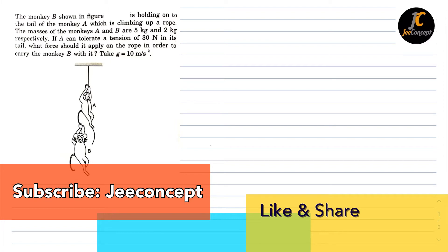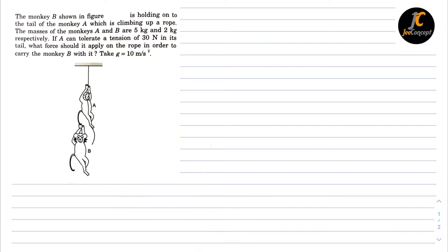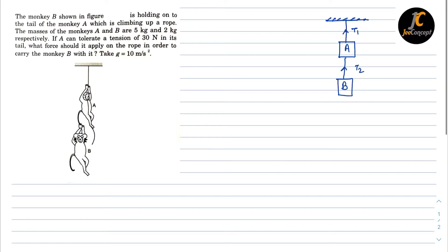To simplify this situation, let's say this is monkey A and this is monkey B. The tail of A is held by B, and A is holding a rope from the roof. In this rope the tension is T1, and in the monkey's tail the tension is T2.